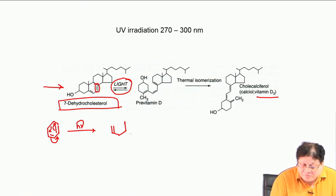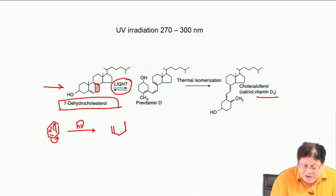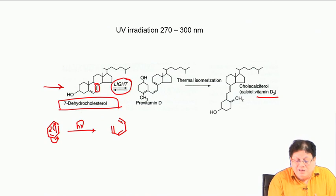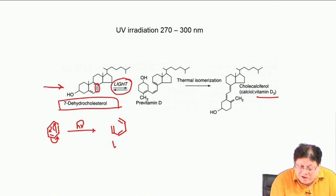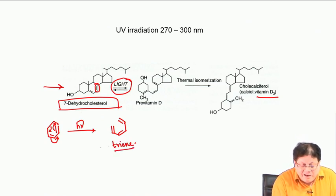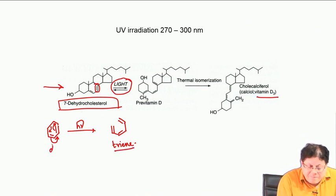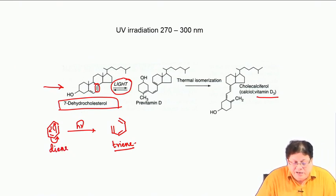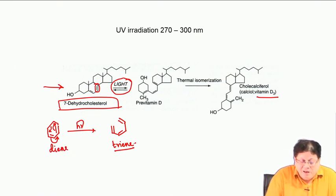You have a double bond here, a double bond here, and a double bond here — so it is now a triene. From a cyclic diene you get an acyclic triene.